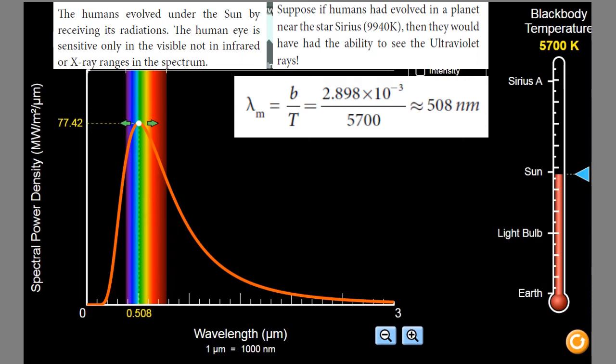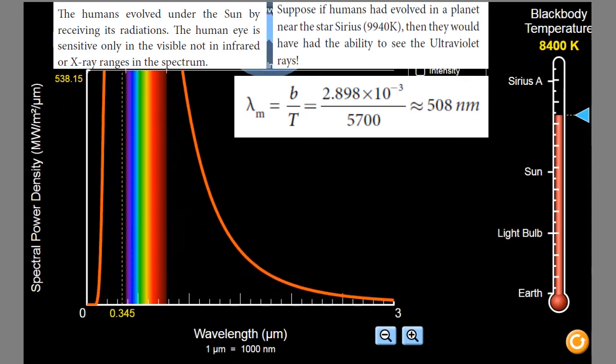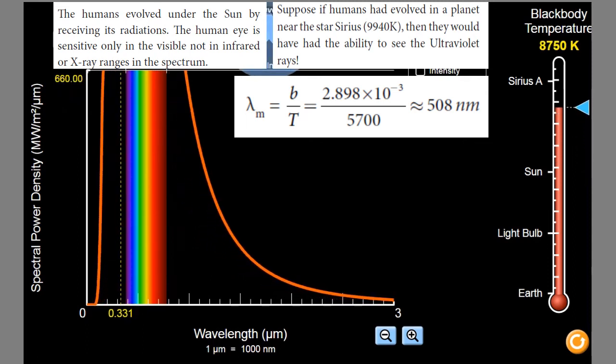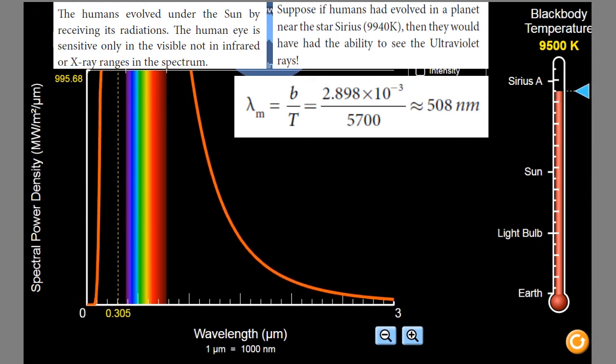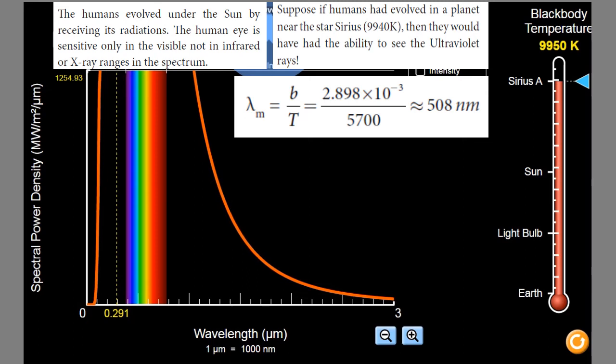Now, I am going to switch over from sun to Sirius. 9,940 Kelvin. 9,940 Kelvin. I am rising the temperature. If it is raised, look at that. 9,950 is there. So, if it is exactly kept at 9,950, which radiation is emitted?